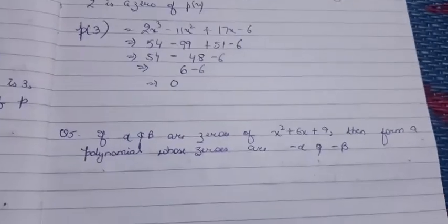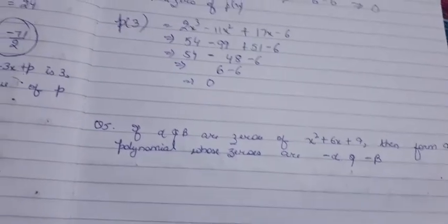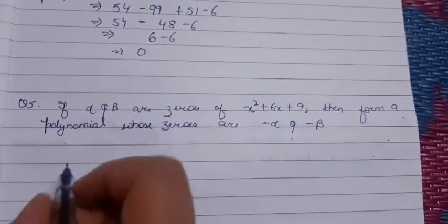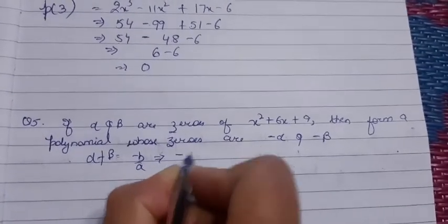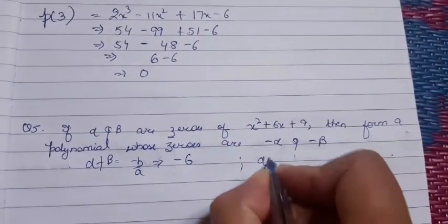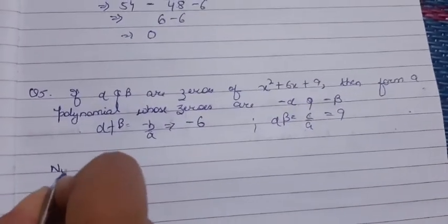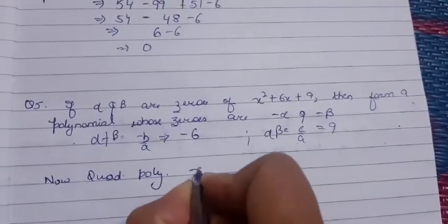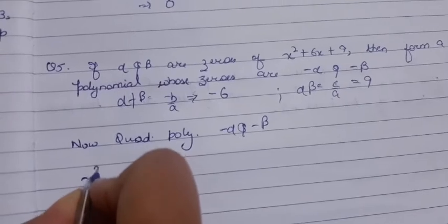First of all, let us find out the value of α and β. Let us find the sum of zeros: α + β = -b/a = -6. And α·β = c/a = 9. Now we need a polynomial whose zeros are -α and -β.